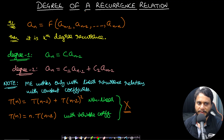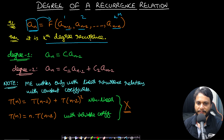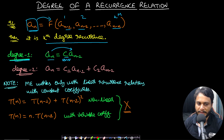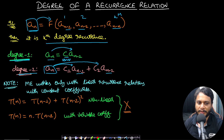Now let's learn about the degree of a recurrence relation. If A_N is a function of A_{N-1}, A_{N-2}, and so on till A_{N-k}, then the current term depends on k preceding terms, and this is called a kth degree recurrence relation. For a degree one recurrence relation, A_N equals c times A_{N-1} where c is a constant. For a second example, A_N equals c1 × A_{N-1} + c2 × A_{N-2}, where the current term depends on two preceding terms — this is a degree two recurrence relation, provided c1 and c2 are constants.